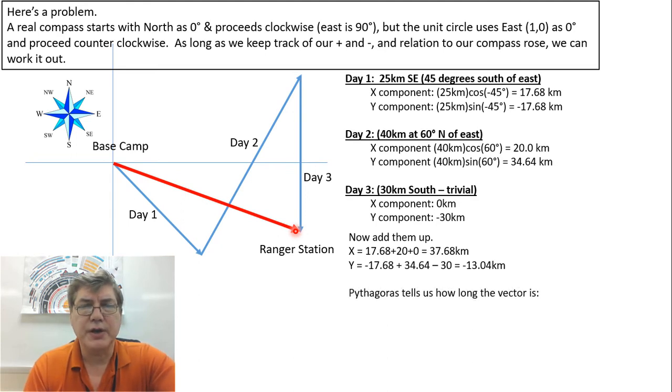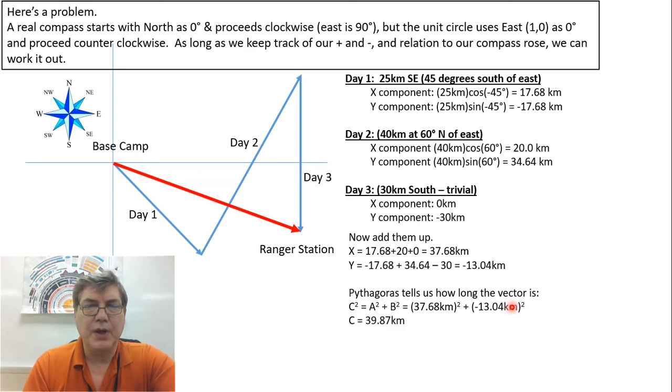So Pythagoras can tell us how long this vector line is, because we know that a squared, the x direction, plus b squared, the y direction, is going to give us c squared. Notice that when we square this negative number, it's going to be a positive, and that's okay, because we only have positive distance. We can't have a negative distance. We take the square root, and we get 39.87 for our length of that line.